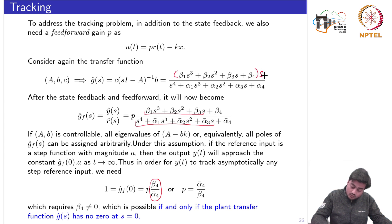This s would stay as it is. If this s stays as it is then the DC value would definitely be 0. In that case we cannot track any reference signal because the response would always be 0.